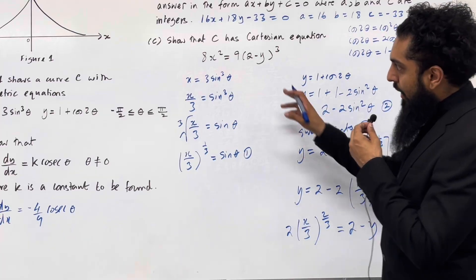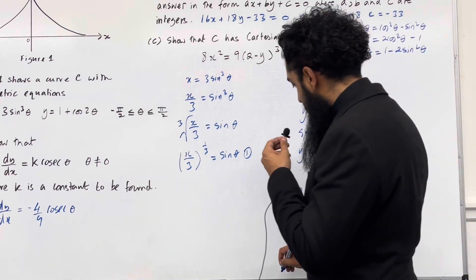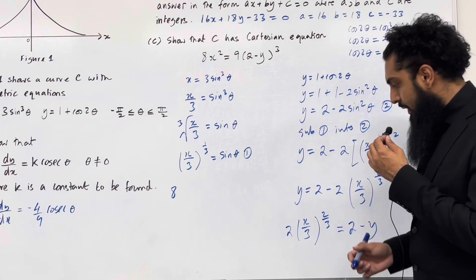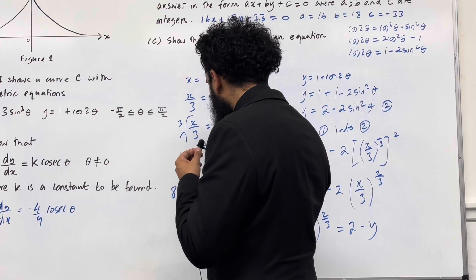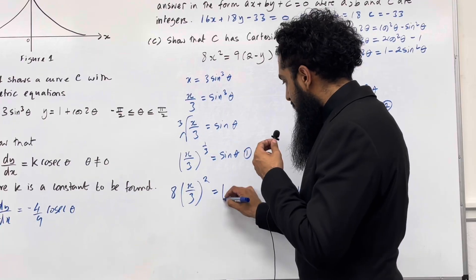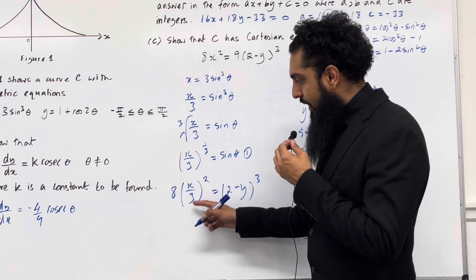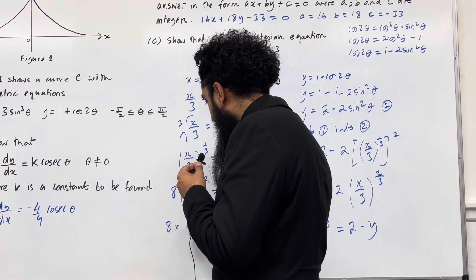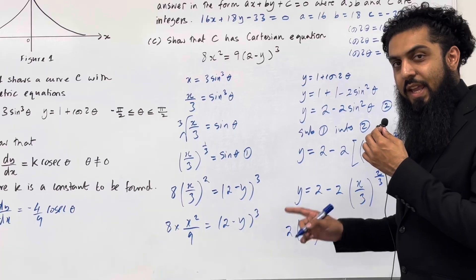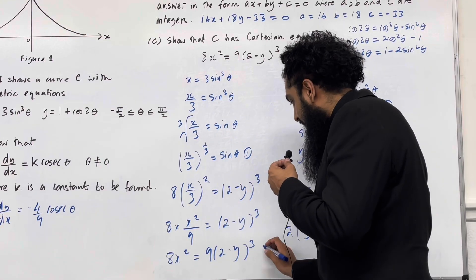In the desired form I need 2 minus y to the power 3, so I raise both sides to the power 3. 2 to the power 3 becomes 8, and by laws of indices x over 3 raised to the power 2 thirds times 3 gives x over 3 to the power 2. This equals 2 minus y to the power 3. Squaring top and bottom: 8 multiplied by x squared over 9 equals 2 minus y to the power 3. Multiplying the entire equation by 9 gives 8x squared equals 9 lots of 2 minus y to the power 3, as required.